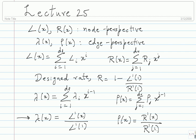Any questions on lambda_i's and rho_j's, or anything about actual construction? Some of you might take that as your project, so it's a good time to bring it up. Let's look at Gallager A on irregular codes.